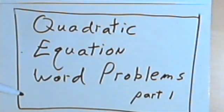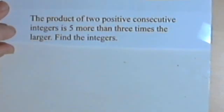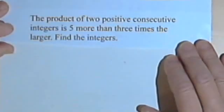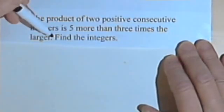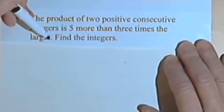This video is going to be about word problems that are solved with quadratic equations. So here's the first example. The product of two positive consecutive integers is 5 more than 3 times the larger. Find the integers.